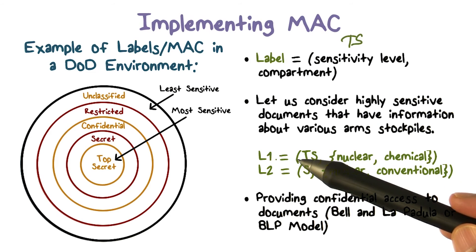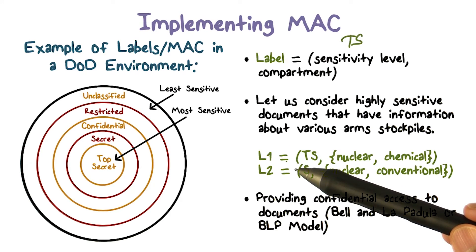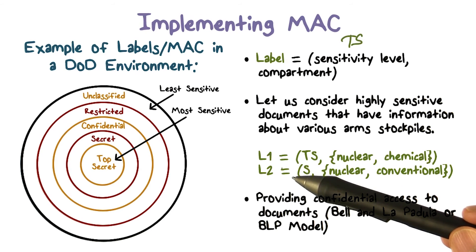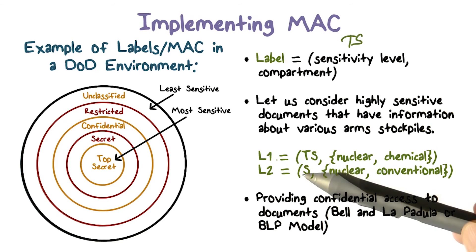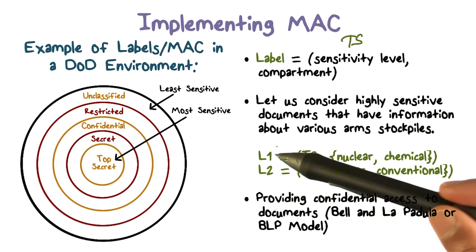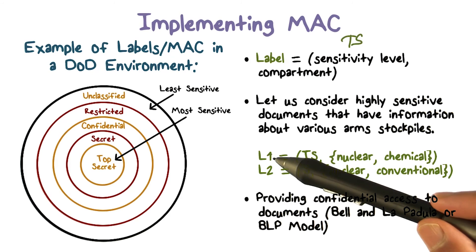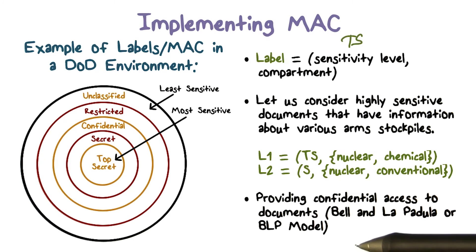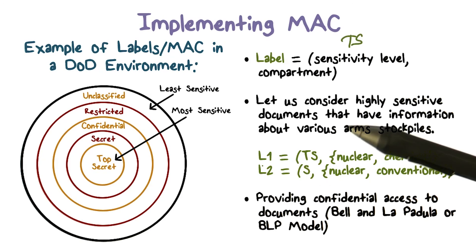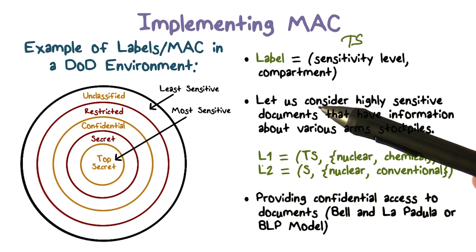Using these labels L1 and L2, we're able to decide access control — which in the end comes down to being able to read and write documents. When disclosure or confidentiality is an issue, there is a model — the Bell-LaPadula model, or BLP model — that makes use of labels exactly like L1 and L2. The model is defined by a set of rules that tell you when, based on these labels, you can read or write. Implementation of mandatory access control always requires some kind of labels.